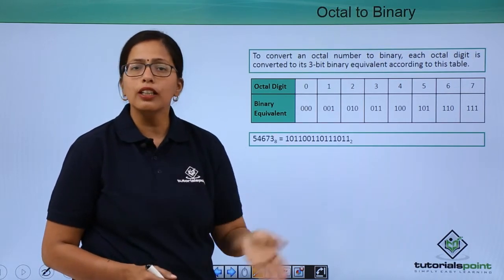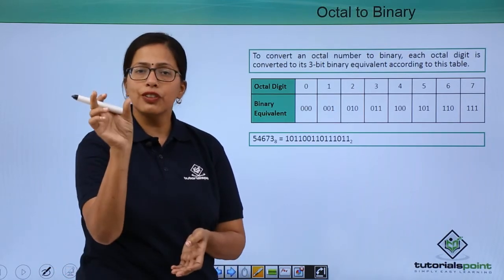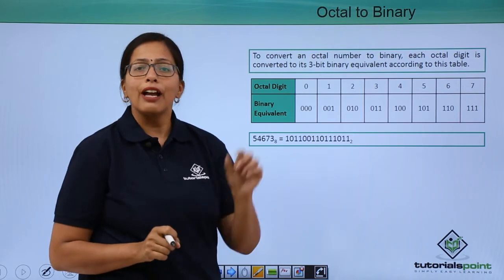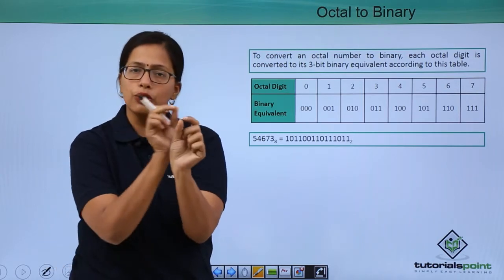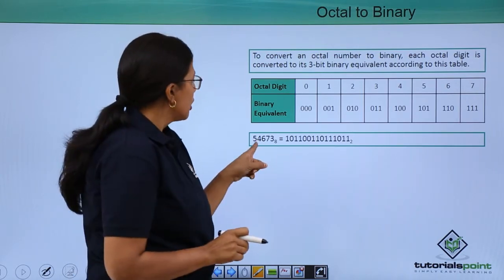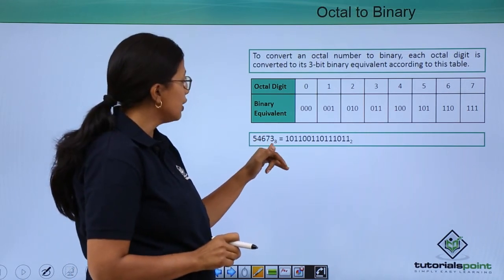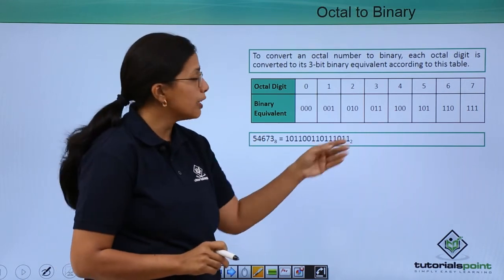For binary to octal, I had made groups of 3 digits or 3 bits. From octal to binary, I will convert each digit into 3 bits. So, I am taking here again an example. 5, 4, 6, 7, 3 to the base of 8. What will be its binary equivalent?